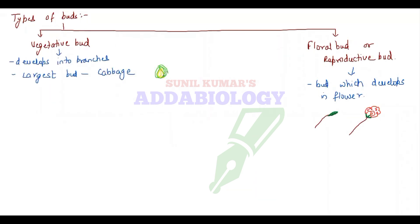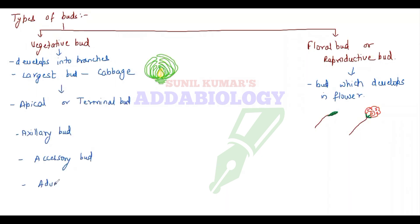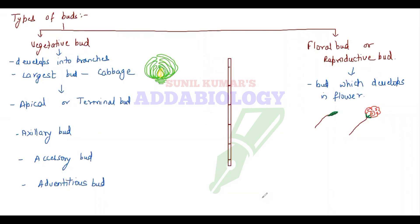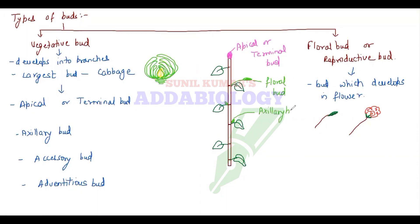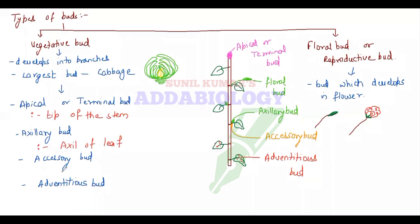Vegetative bud develops into branches. We have different buds like apical bud, also known as terminal bud, axillary bud, accessory bud, and adventitious bud. Apical bud is at the tip; axillary bud is at the axil of the leaf. The adventitious bud is present in the leaf or at the nodes.